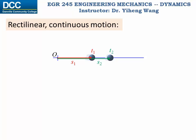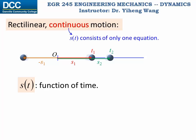Since here S is a vector, negative S indicates a position in the opposite direction to the origin. Once again, the position S is a function of time. Here, continuous motion means that the position function s(t) consists of only one equation, versus later on when we discuss erratic motion, that is when the position function is a piecewise function that consists of multiple equations.